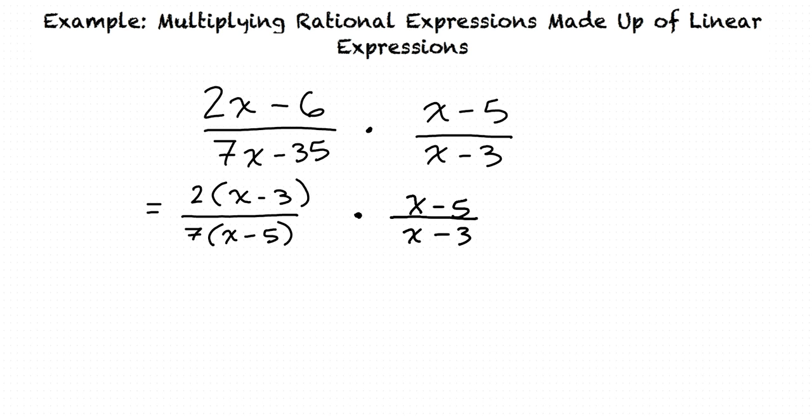We can now cancel the common expressions. After doing so, the result is 2 over 7 times 1 over 1. The final answer is 2 over 7.